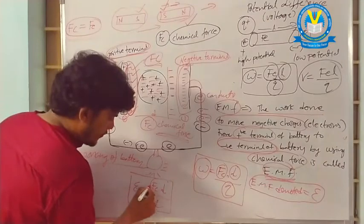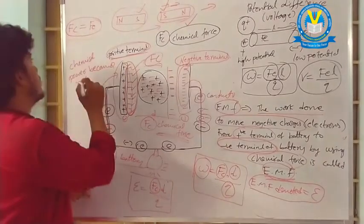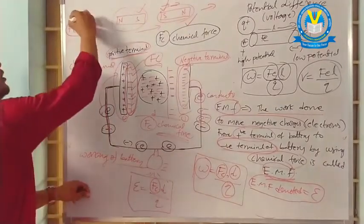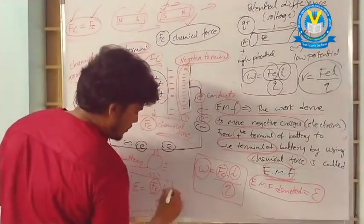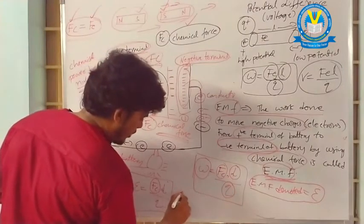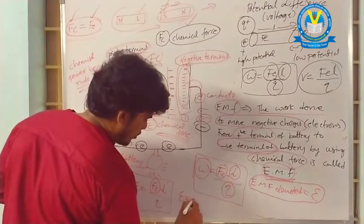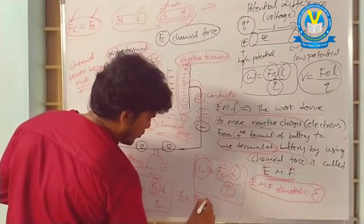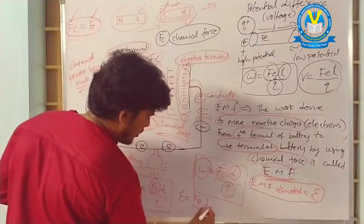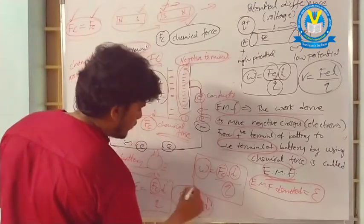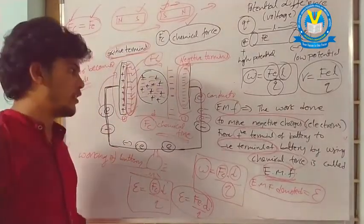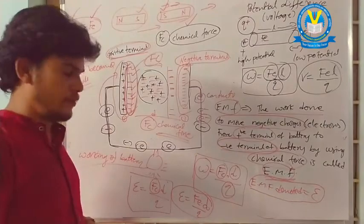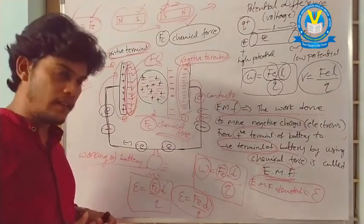We know already that Fc equals Fe. So instead of Fc we can write: epsilon equal to Fe into D by Q. So ε = Fe × D / Q is the formula of electromotive force. I hope you are clear.